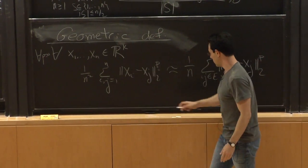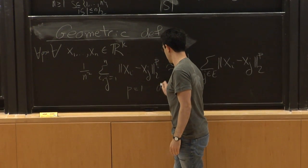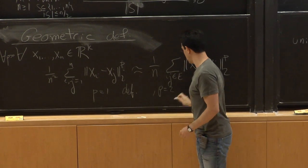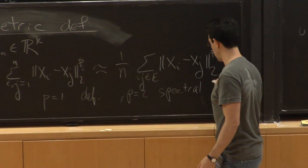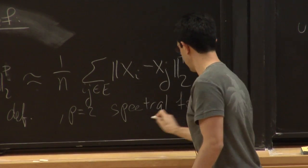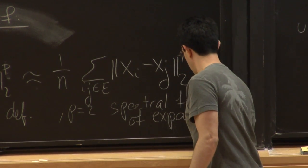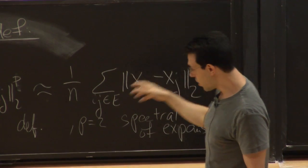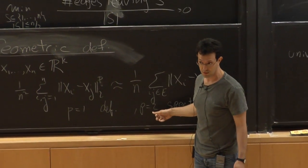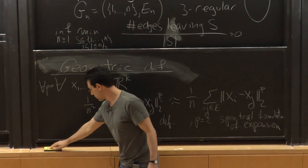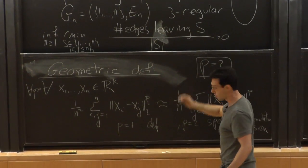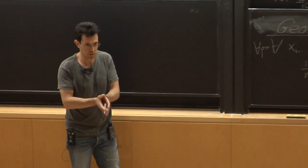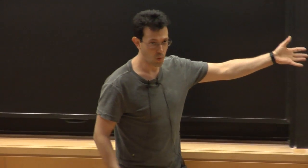The equivalence between the combinatorial and geometric definitions: p=1 is just the definition — it's playing with the definition. p=2, for those who know, is the spectral characterization — the spectral formulation of expansion. You look at the adjacency matrix of the graph; it has a spectral gap, and this is the same as the inequality for p=2. The equivalence between p=1 and p=2 is what we call Cheeger's inequality. From now on I'll focus on p=2 because that's the simplest, but this is what an expander means — a very important classical notion from graph theory with that geometric meaning.